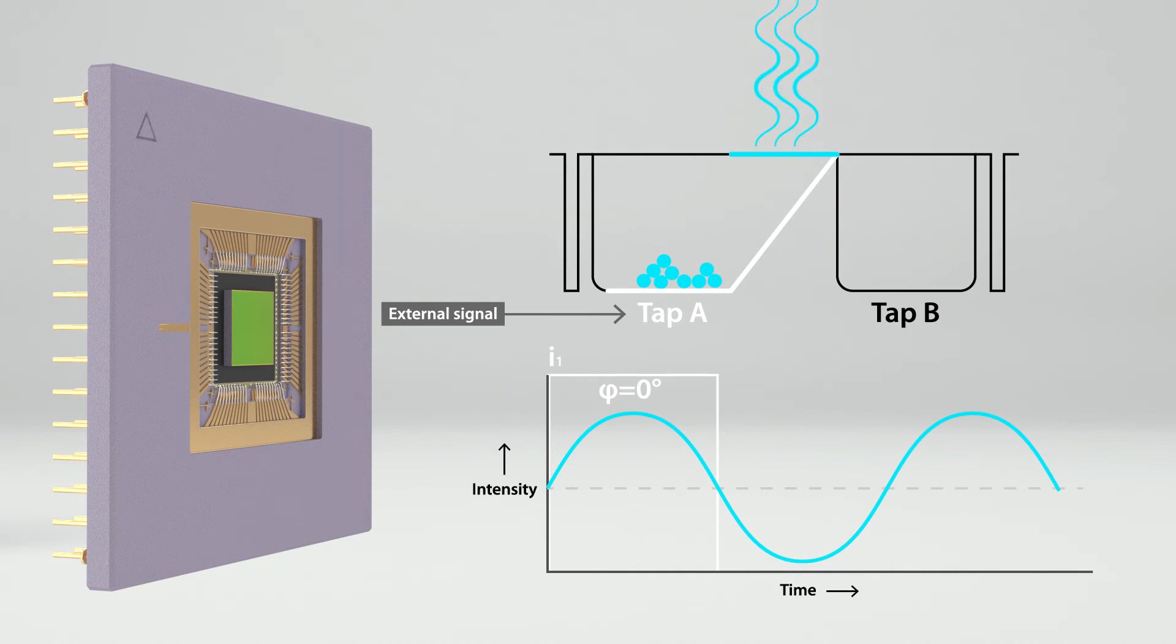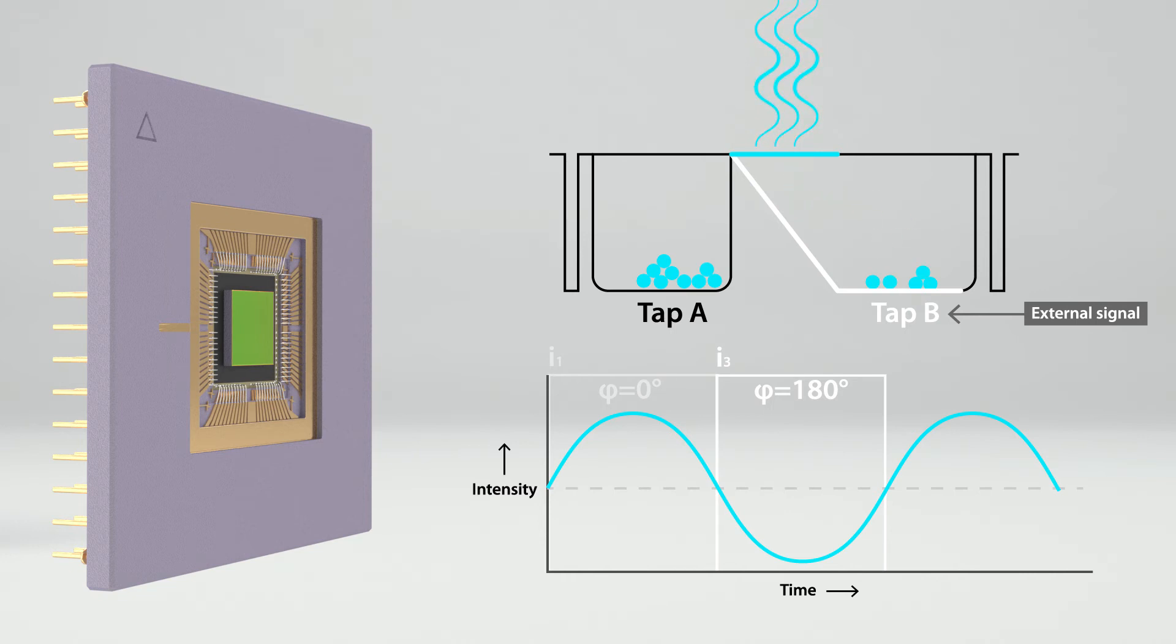At phase 180, tap B is active and all charge carriers go to charge bucket B, resulting in image I3. This kind of charge swing enables the simultaneous record of I1 and I3 in the same camera exposure creating a double image.